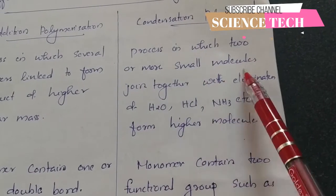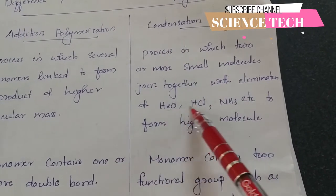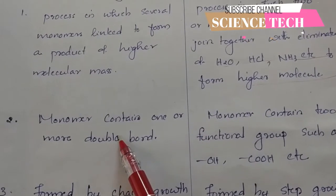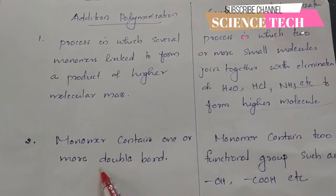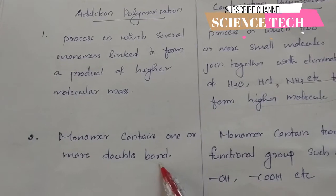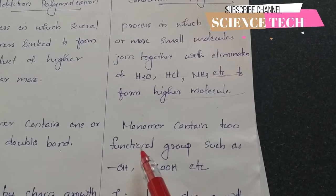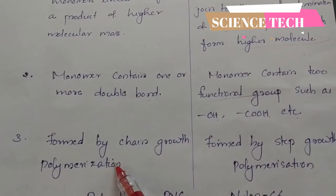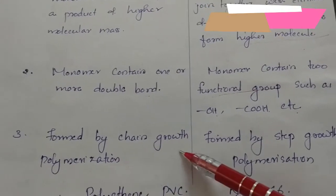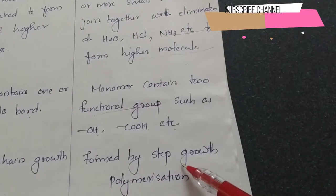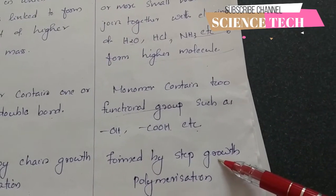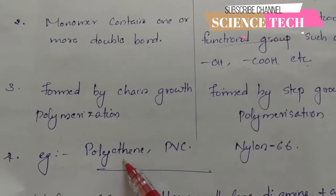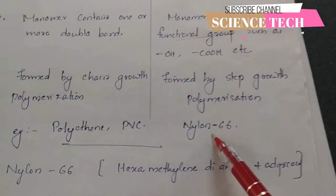In addition polymerization, monomers containing one or more double bonds are linked together to form a product of higher molecular mass. It is also called chain growth polymerization. In condensation polymerization, monomers contain functional groups such as alcohol and acid groups, and it is called step-growth polymerization.